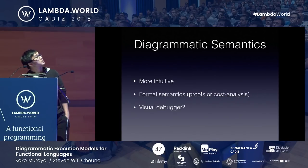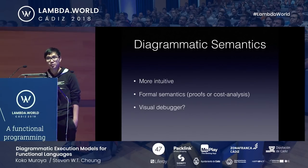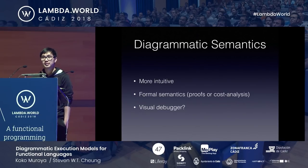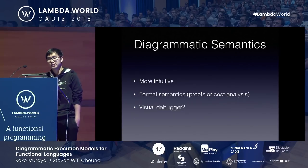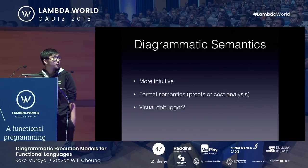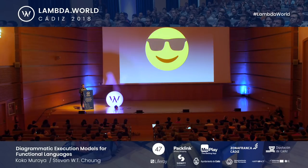In conclusion, the diagrammatic semantics is more intuitive — you can really see what the program does. The semantics is formal, meaning you can do proofs, cost analysis, and perhaps build feature debuggers using it. All in all, we think the diagrammatic semantics is cool.